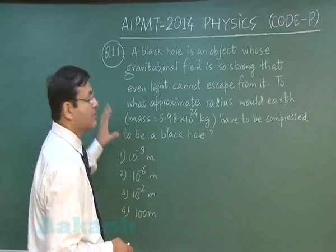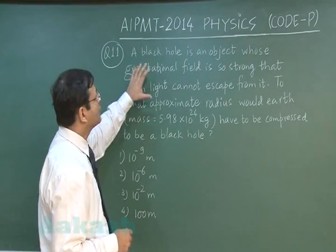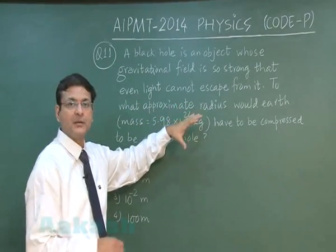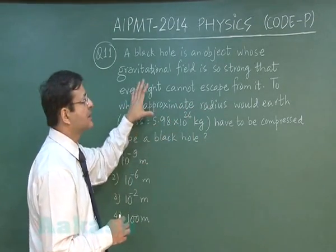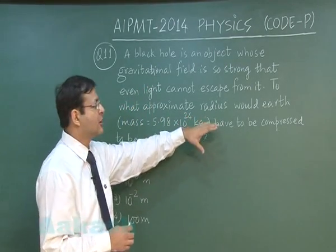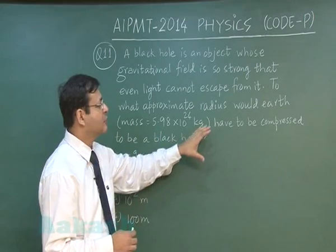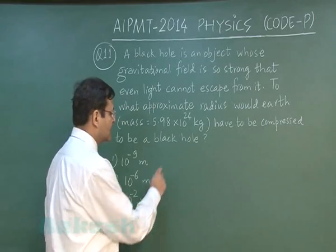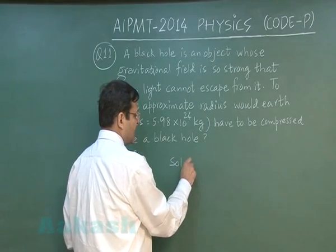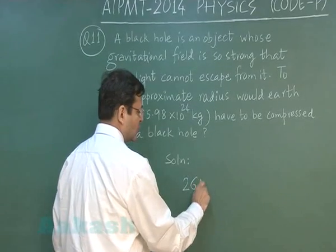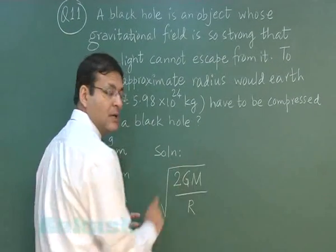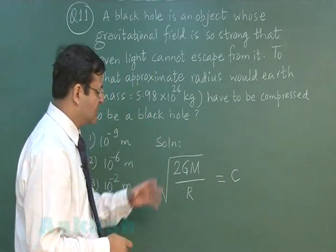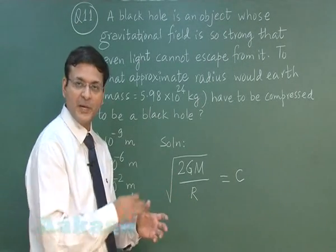In question 11, a black hole is defined as an object whose gravitational field is so strong that even light cannot escape. The question asks to what radius Earth would need to be compressed to become a black hole. The key idea is that the escape speed equals the speed of light c: escape speed = sqrt(2GM/r). Setting this equal to c gives the critical radius.